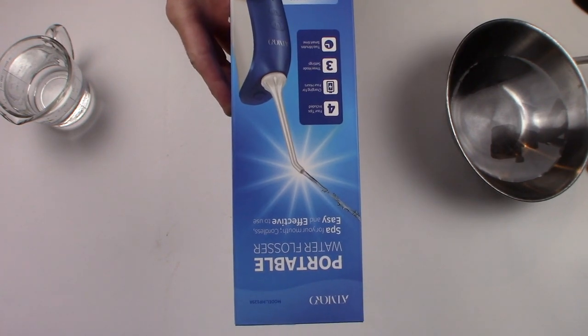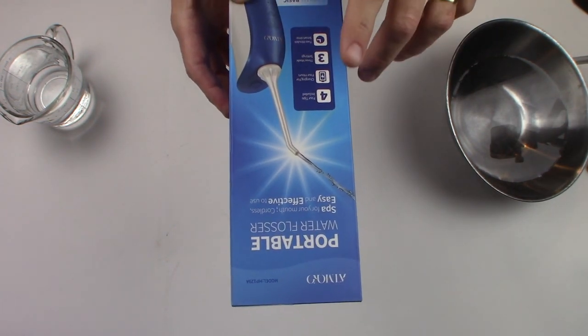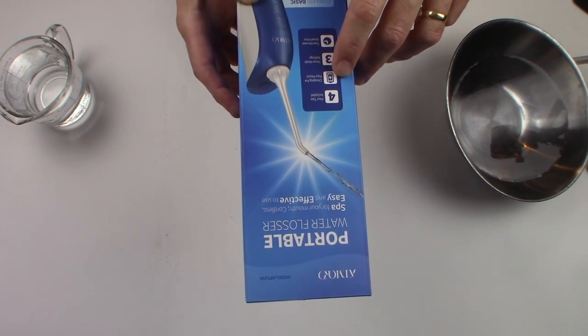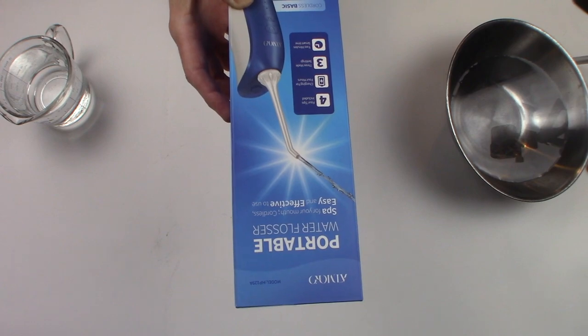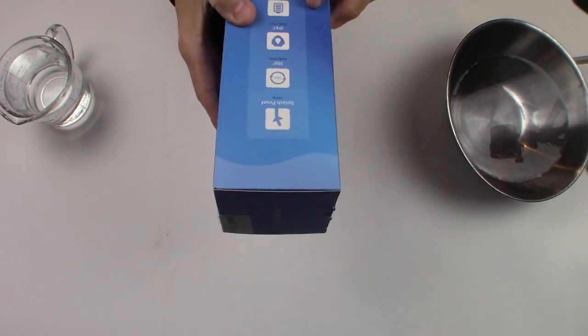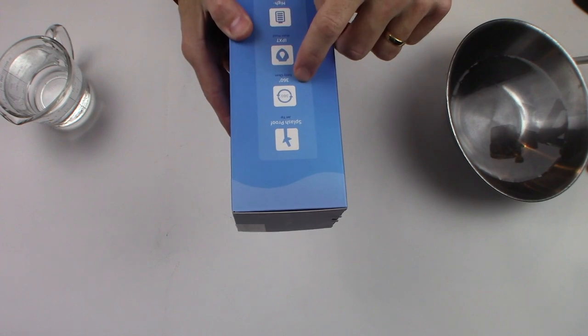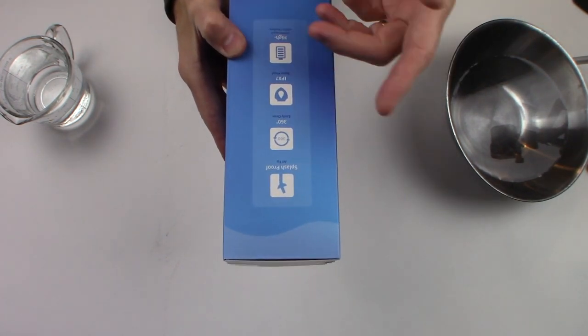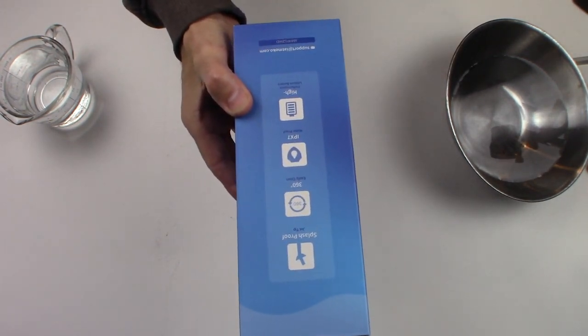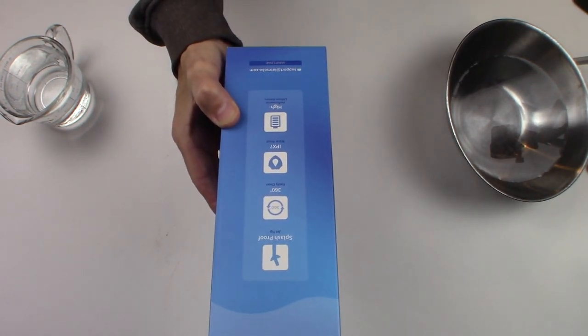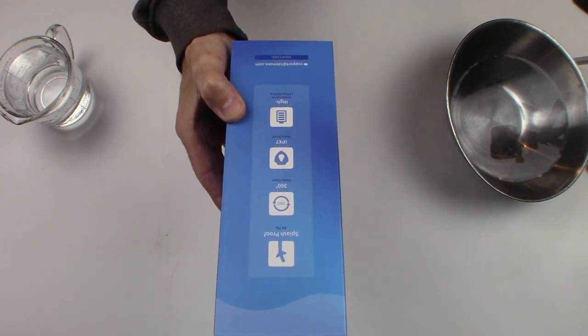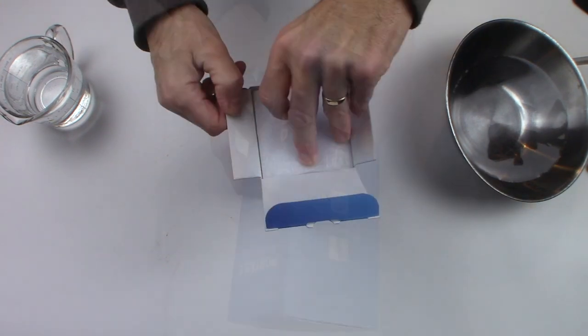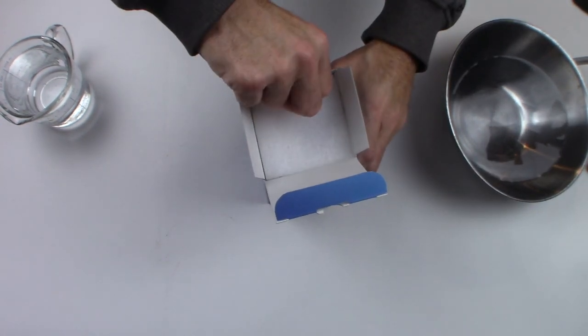This is a cordless model. What's included: four tips, charges up to four hours, three mode settings, and a two-minute smart timer. Has a splash-proof head, 360 nozzle turn, IPX7 waterproof - you can use this in the shower. It also has a high-performance lithium battery included.